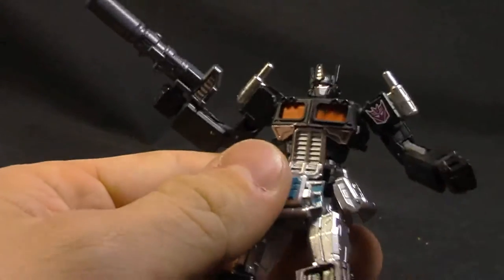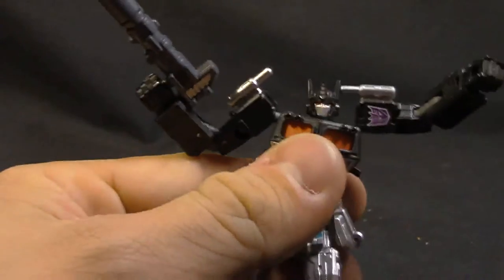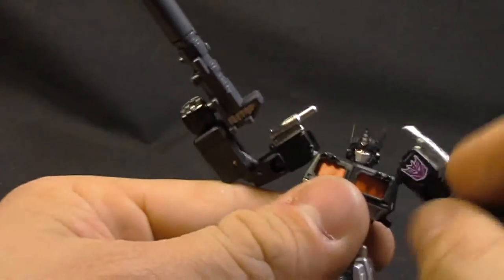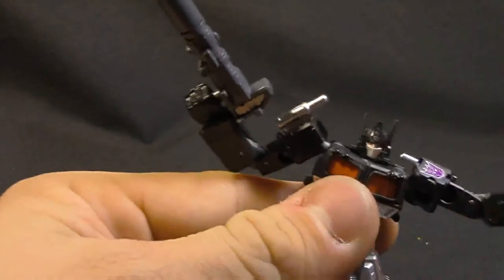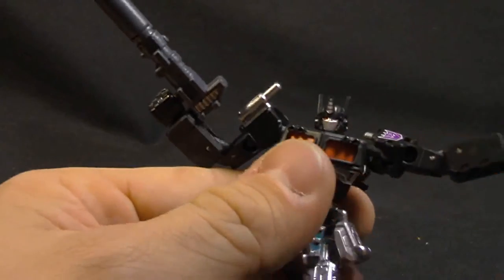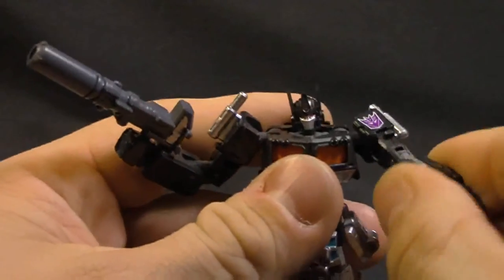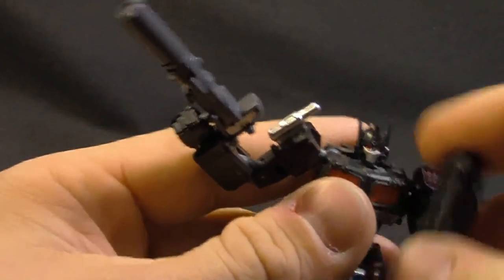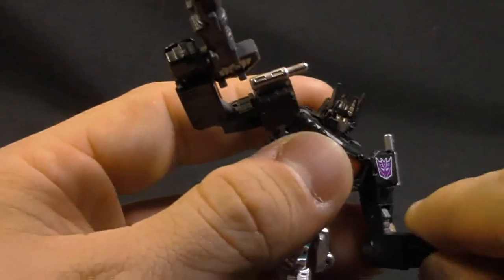You get a lot of posability there and then the hips are on double ball pegs. So you get the ball joint at the shoulder and then a ball joint at the shoulder and the body, you know what I mean, you know what I'm saying. Bicep swivel, double jointed elbow, ball jointed wrist.